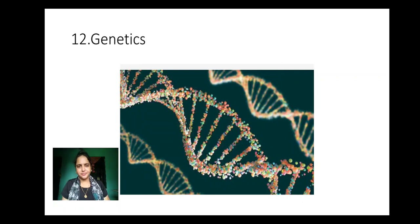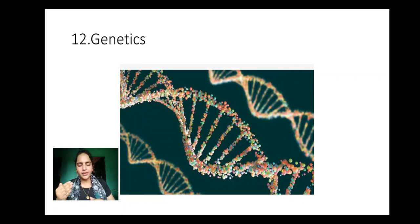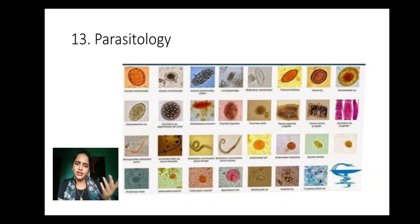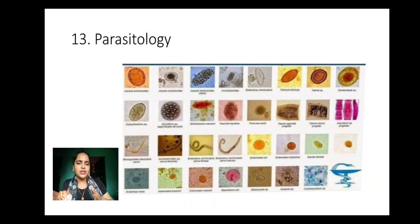Next we have genetics. Genetics is the branch of biology which deals with the transfer of characters from one generation to the next — the transfer of characters from parents to their children. Next we have parasitology. Parasitology is the branch of biology which deals with the study of parasites. There are two types: ectoparasites, which live on the external surface of another organism, and endoparasites, which live inside the body of another organism. Parasitology deals with the study of parasites and the relationship between parasites and host.